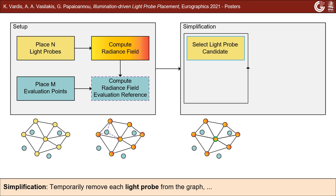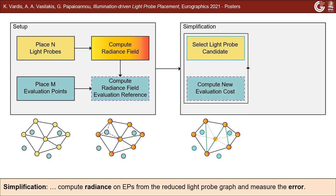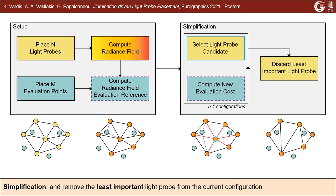Then, the simplification stage starts by removing a light probe from the graph and re-computing the graph connections. Given this new graph, the new radiance field is computed and compared to the reference. This probe is then placed back and the method continues until it has checked all probes in the graph. In the end, the probe with the least error is removed and the graph connectivity is restructured.